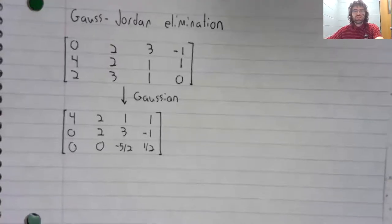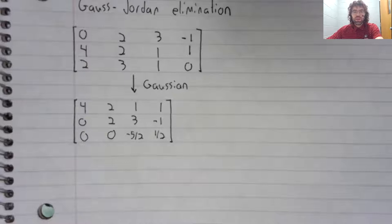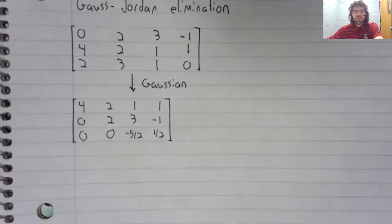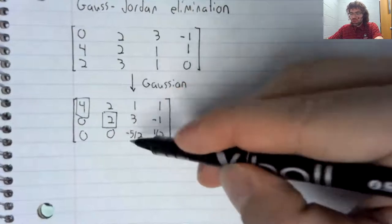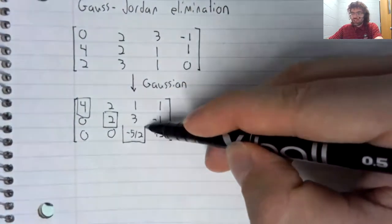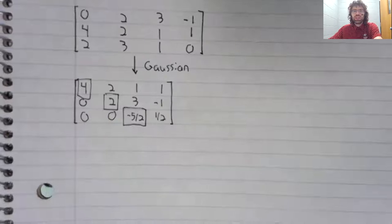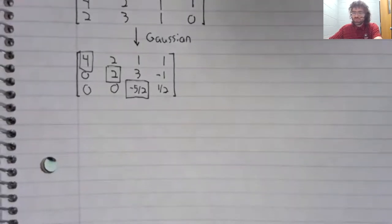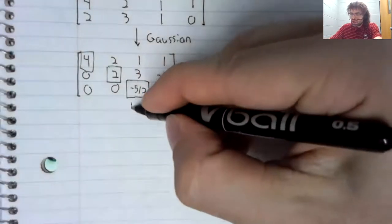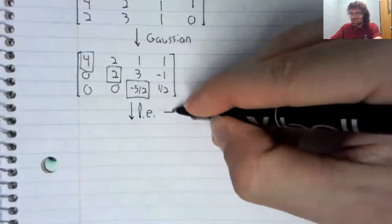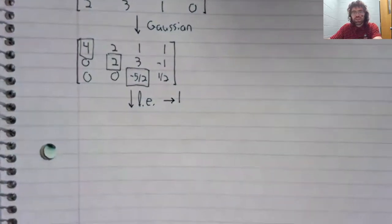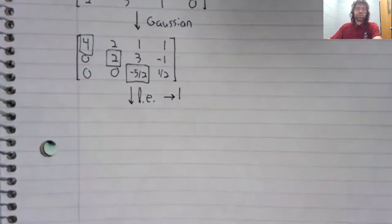This matrix is in row echelon form. We want it to be in reduced row echelon form, so there are a few things that we need. Our leading entries all need to be one. That can be our next step to turn our leading entries to one. And how are we going to do that?